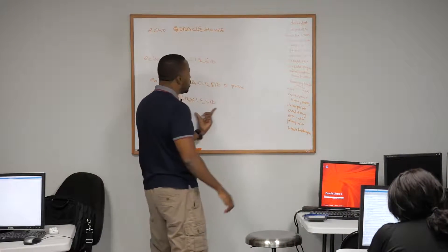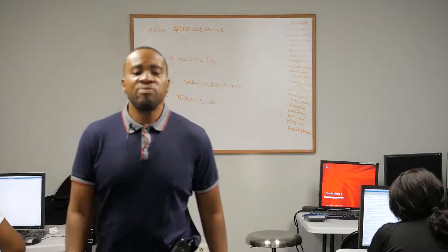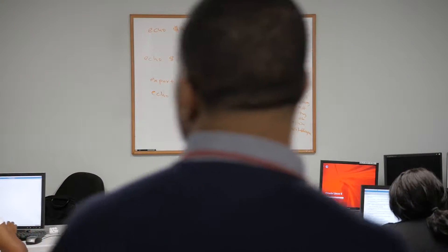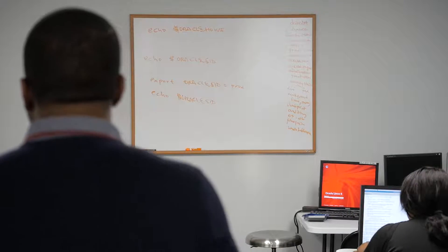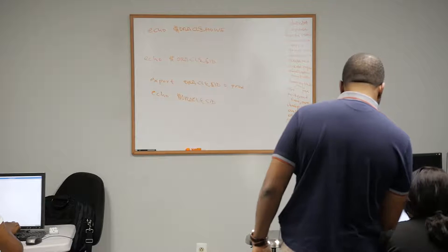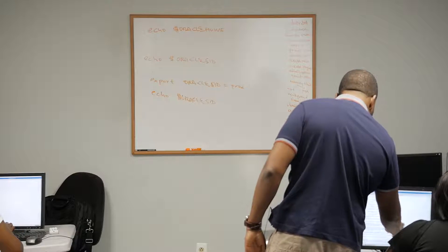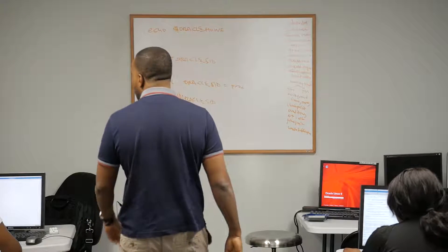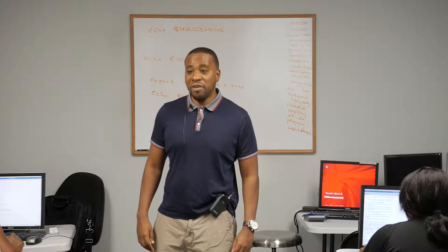Do echo space dollar ORACLE_SID, all caps. Everybody should see 'prod'. Now everybody do sqlplus slash as sysdba. As long as you see prod, connect with sqlplus slash as sysdba — we are now connecting to a different database. Now let's verify: select name from V dollar database.